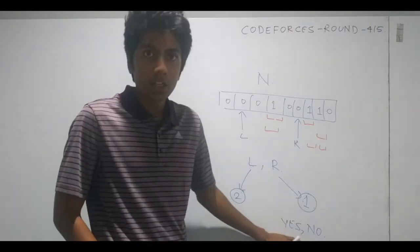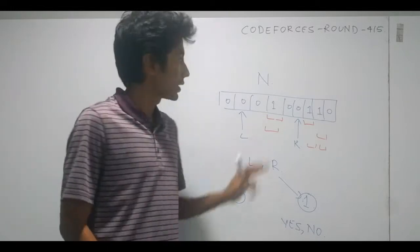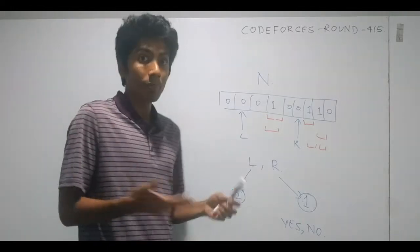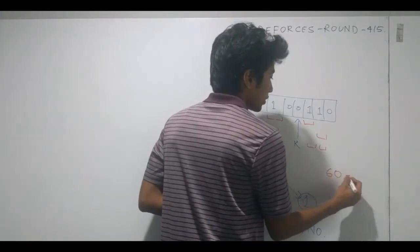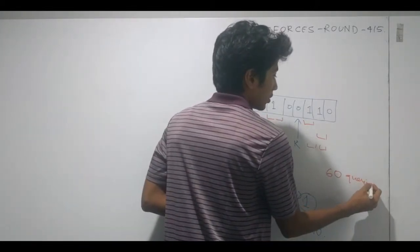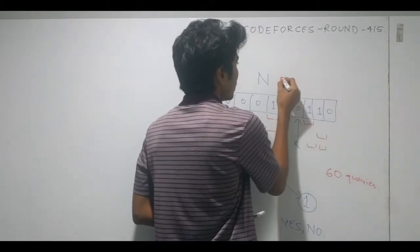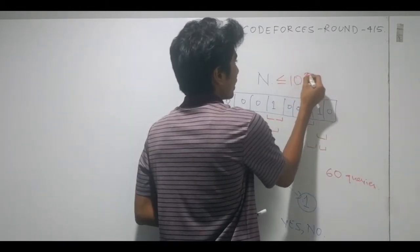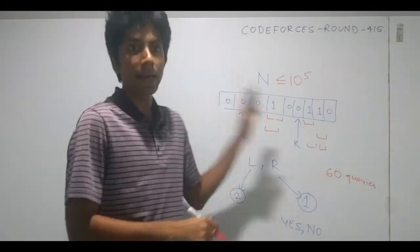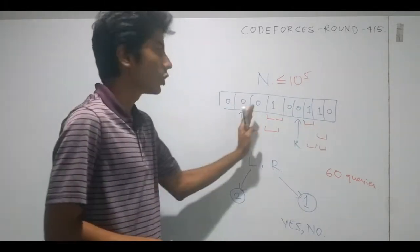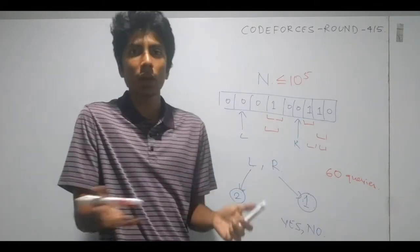Using these queries you need to find at least two elements in this array. The biggest constraint is that you have only 60 of these queries. The length of the array can be 10 to the power of 5, so that's a pretty big array — you can't linearly scan it to find which two elements are set.